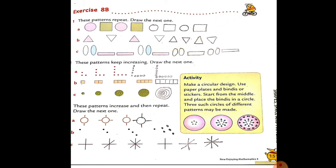Number two mein: one, two, three — dot wala L hai. Phir usmein upar one dot aur side mein one dot add karke LL banata jaana hai. Aise yeh three complete karna hai. Phir this pattern increases and then repeats — draw the next one. Usmein one mein upar aur neeche standing line waala; phir dusra hai — circle usmein upar neeche standing line aur aajo baajo mein bhi sleeping line. Aise increase hua hai — aapko bhi aise increase karke draw karna hai.